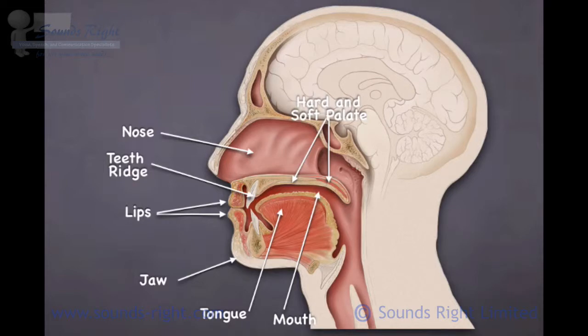The nasal passages should be clear for the M, N, and NG sounds. Now, in normal conversation, particularly between two people, one doesn't require too much deliberate weighting of the consonants. But once we're beginning to address a group or an audience, then the consonants should be defined with more clarity and more definition. This increases the audibility, particularly of the final consonant.